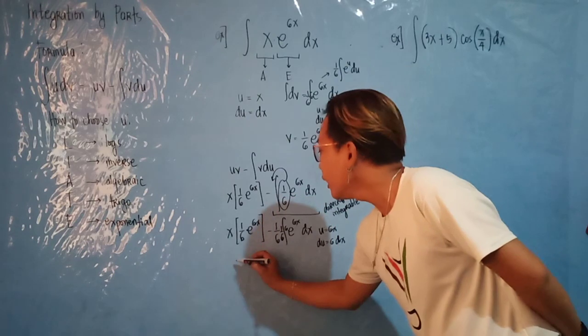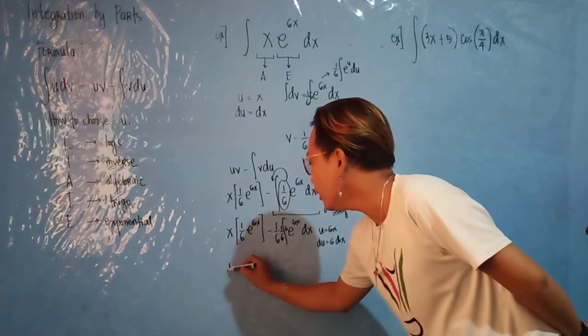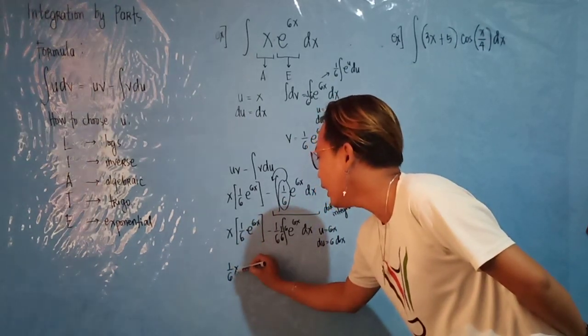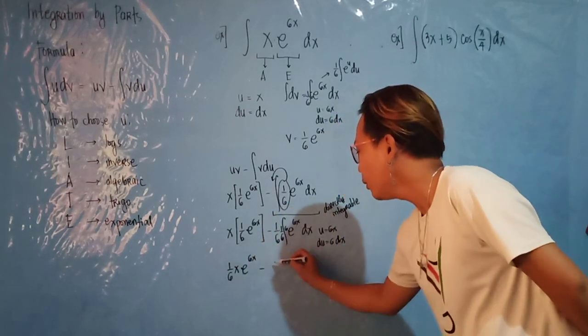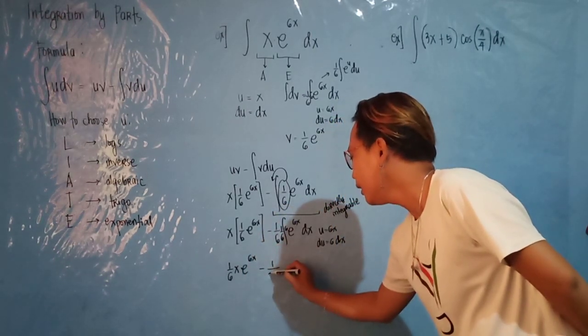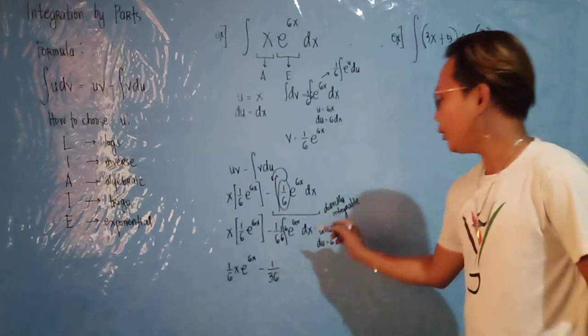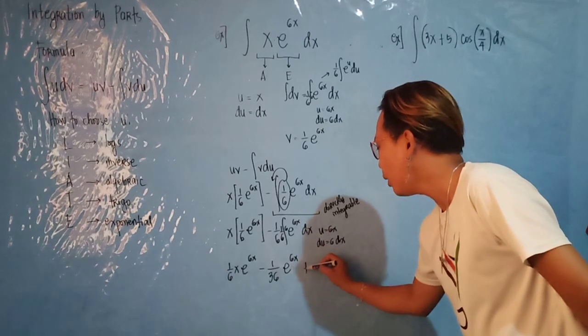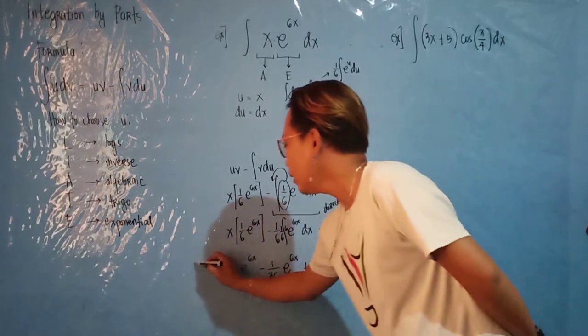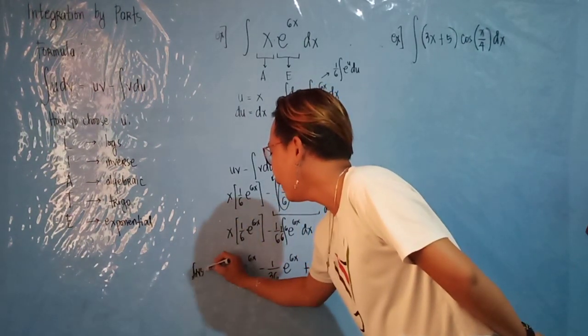Now your equation will be 1 over 6 x e raised to 6x, minus 1 over 36, then e raised to u, which is e raised to 6x plus c. Now this will be your final answer.